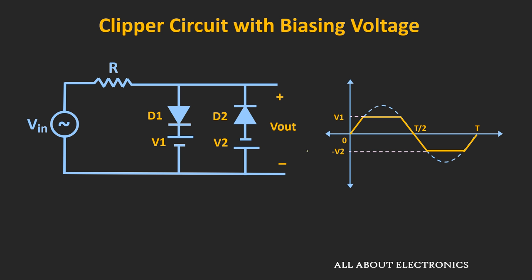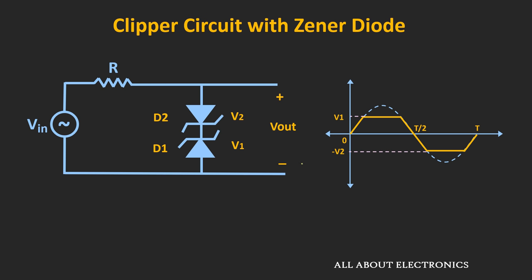Instead of using two biasing voltages, the same waveform can also be achieved by using back-to-back Zener diodes. Here, the Zener voltages of diode D1 and D2 are V1 and V2 respectively, and using this circuit it is possible to achieve the same waveform. In this way, parallel clipper circuits can be used for wave shaping and circuit protection.